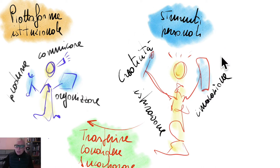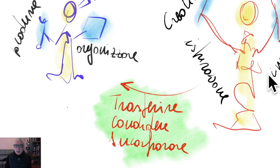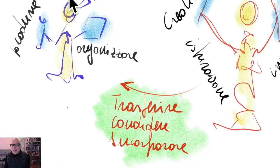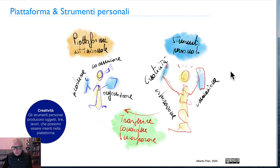Tutto questo dà luogo a dei prodotti. Questi prodotti possono essere pubblicati all'interno di canali cloud oppure essere degli oggetti. Quello che l'insegnante crea — e i suoi studenti possono a loro volta creare — viene trasferito, condiviso oppure incorporato all'interno della piattaforma. In Classroom si apre un compito e all'interno di questo compito si allega uno di questi prodotti realizzati. Non c'è un conflitto: viene mantenuta per l'insegnante tutta la libertà possibile per creare le sue lezioni.